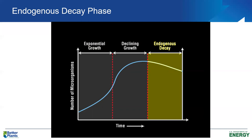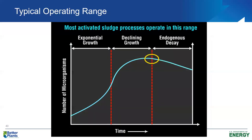The soluble BOD5 in the effluent in the endogenous decay range will be only 1–2 mg/L. If we design our clarifiers conservatively to overcome the pinpoint floc, we'll produce a very high-quality effluent. The activated sludge process is generally operated in the declining growth phase or endogenous phase — shown by the yellow ellipse on the diagram — where we get our best settling sludge and best effluent quality.